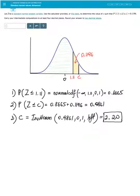In this video we will learn how to compute standard normal values in more advanced type of questions. Let Z be a standard normal random variable. Use the calculator provided or this table to determine the value of C such that probability of 1.11 which is less than or equal to Z which is less than or equal to C.